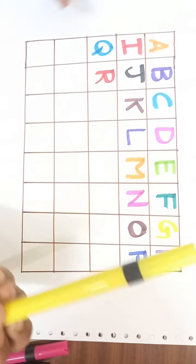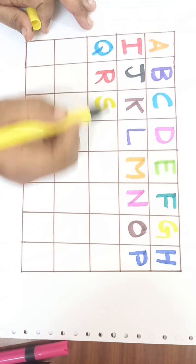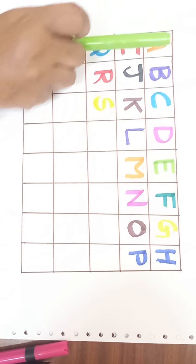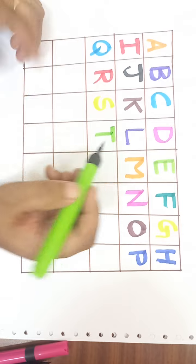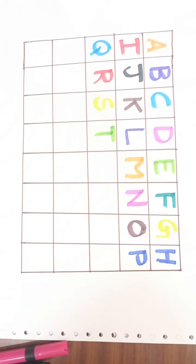Yellow color. S-S-U-N, sun. Light green color. T. T for tree. T-R-E-E, tree.